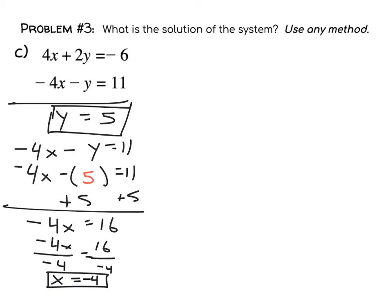So it looks as though we've got an ordered pair solution of negative 4 comma 5. And of course, you should do a proof to check that on both of the equations.